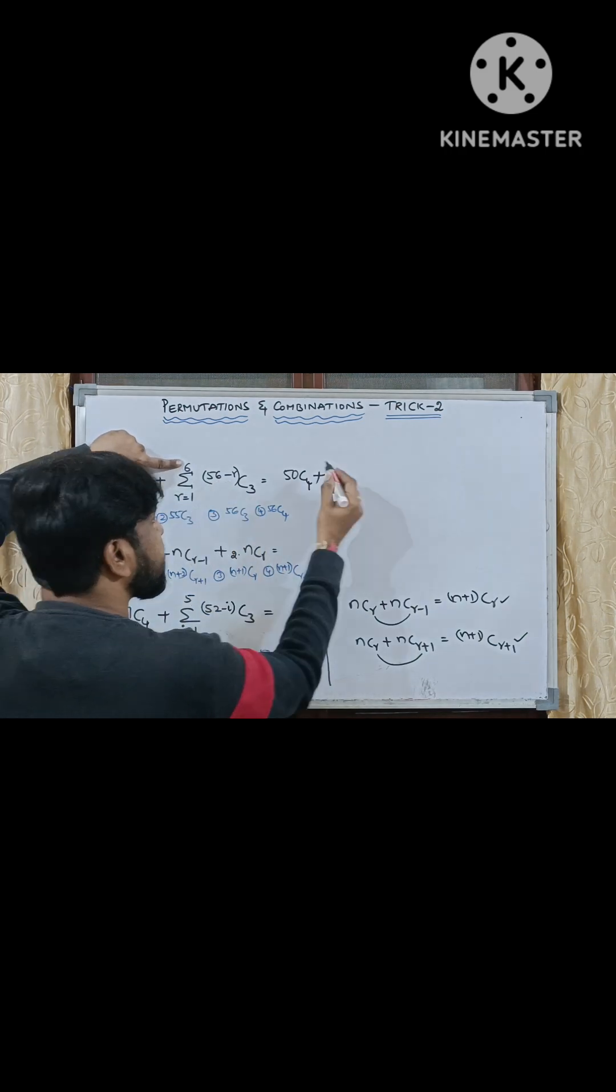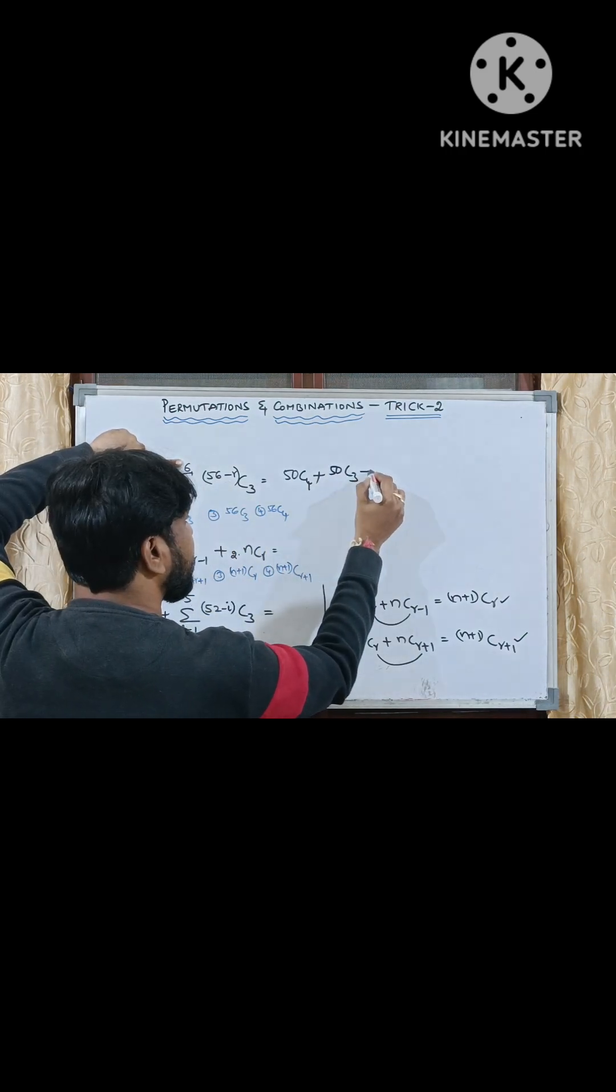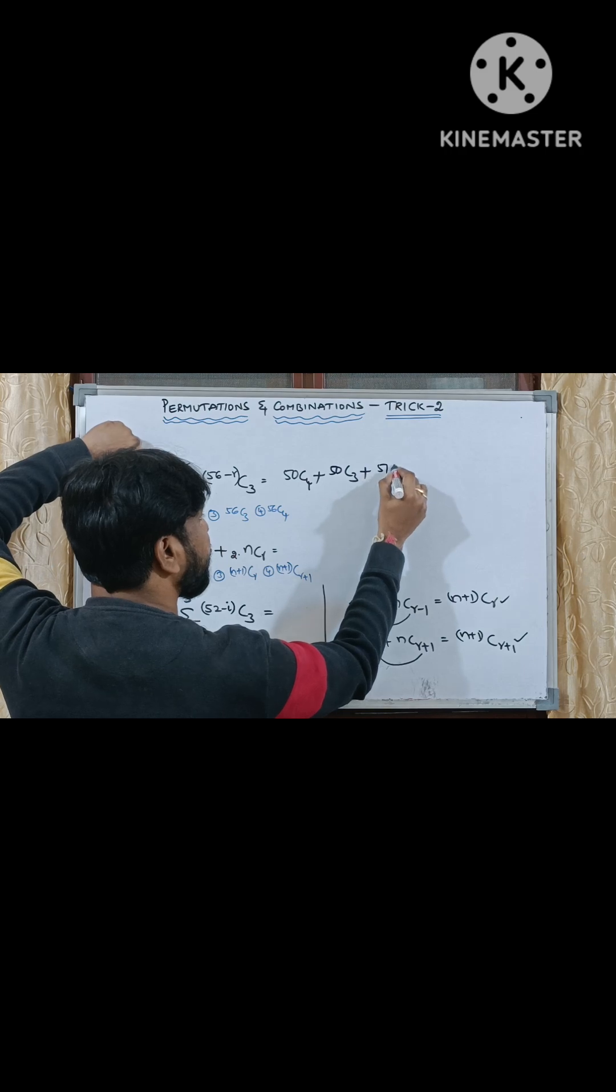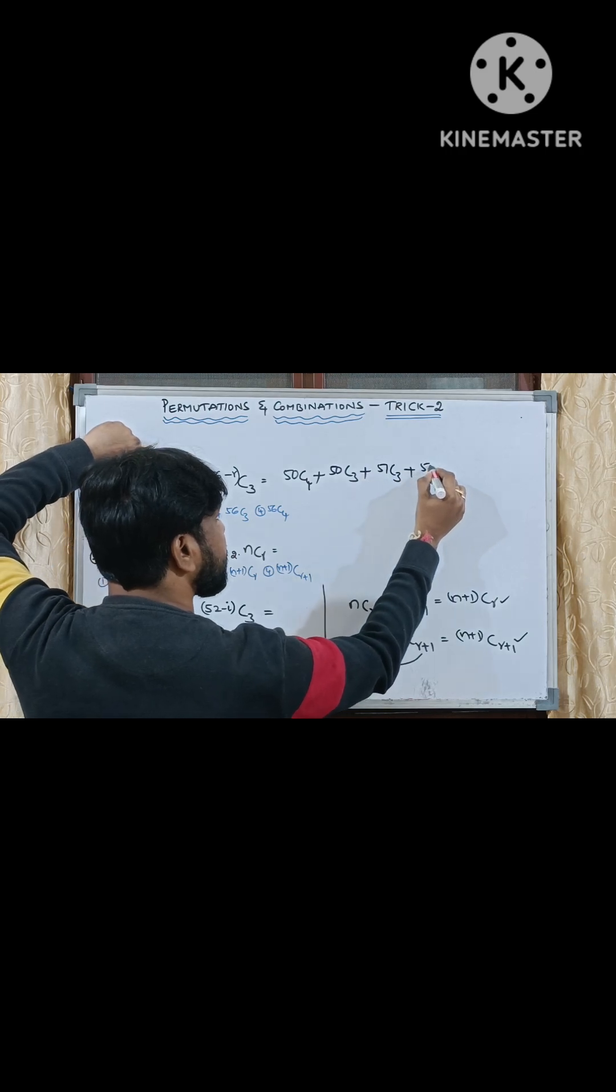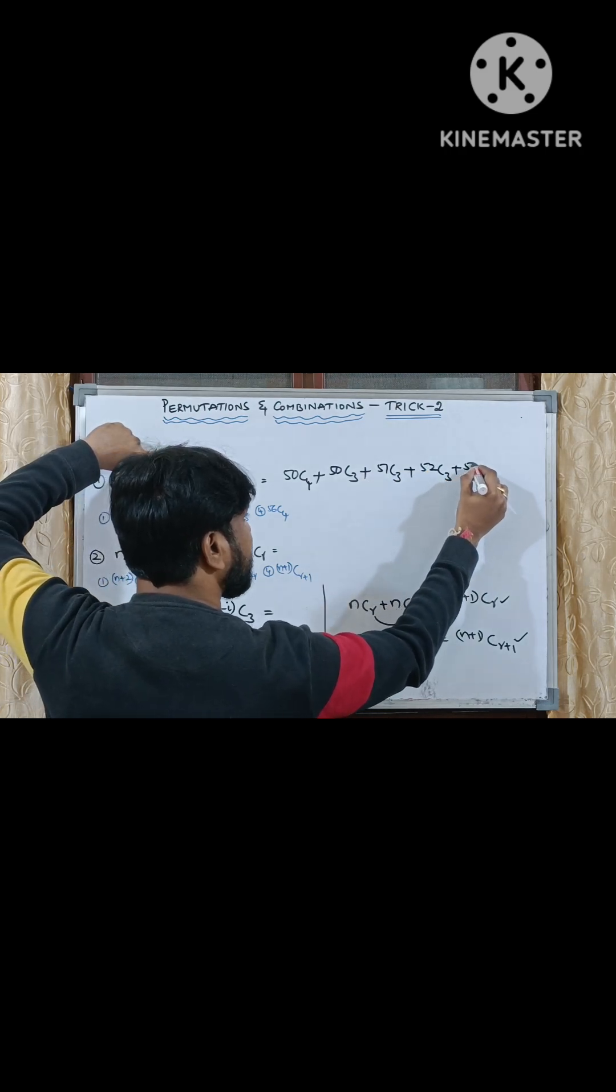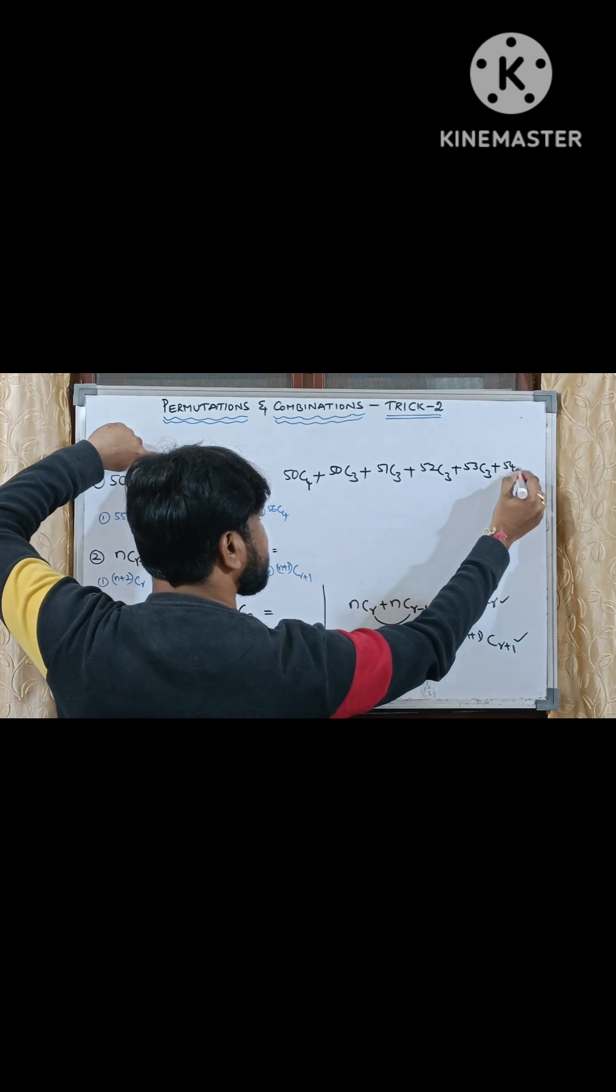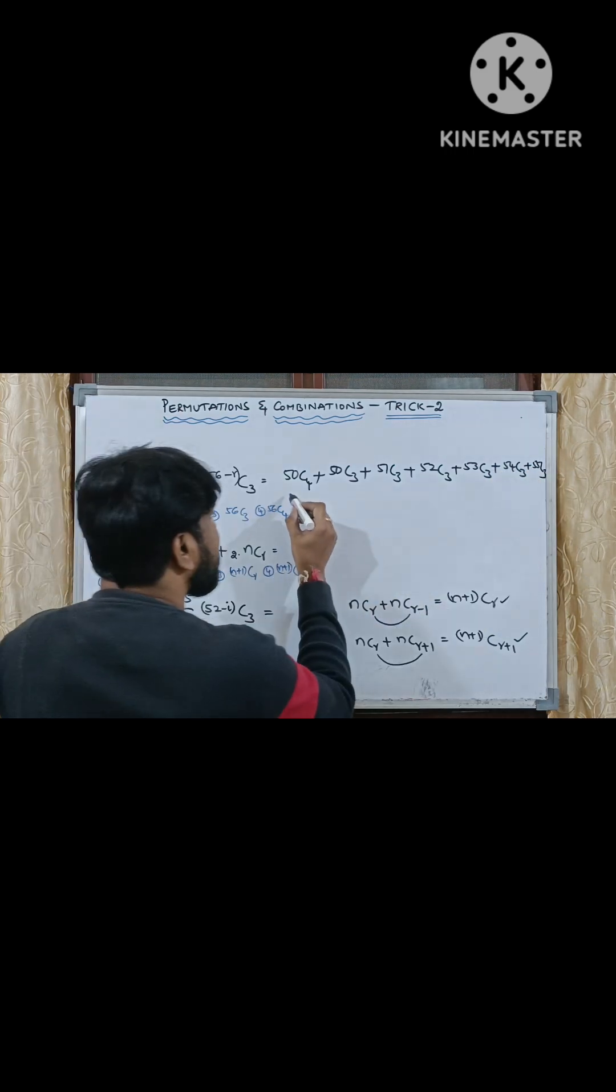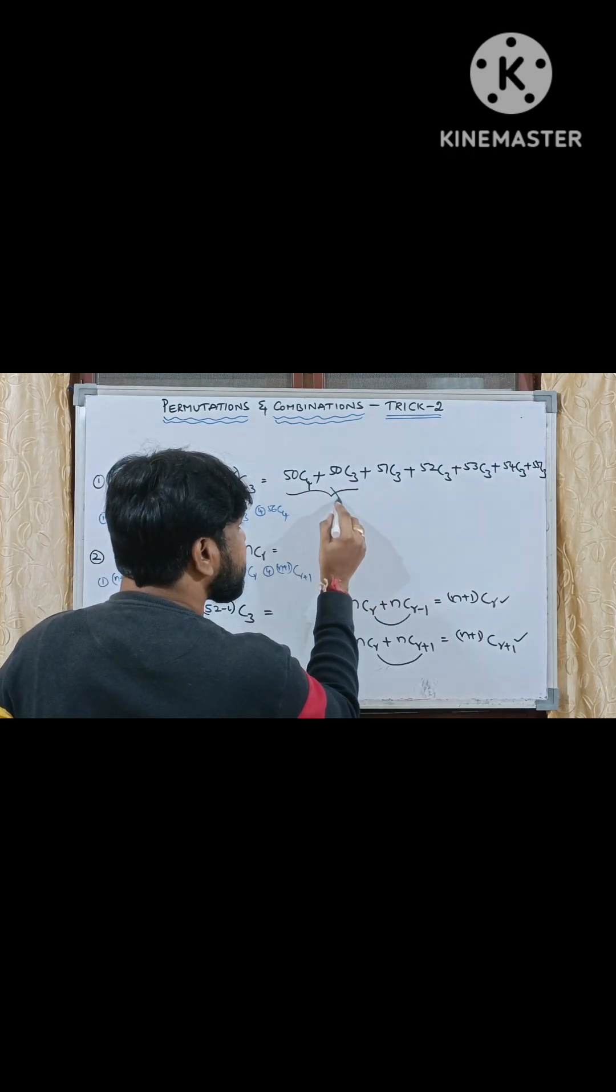So I want to take 6 first. 56 minus 6 is nothing but 50C3 plus next 5 you consider, that is what 51C3. Next 4 you consider 52C3. Next 3, 53C3. Next 2, 54C3. Next 1, 55C3. This can be written as 50C4 plus 50C3.